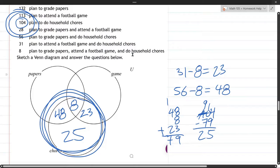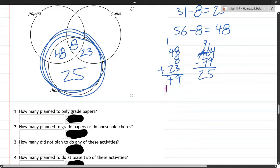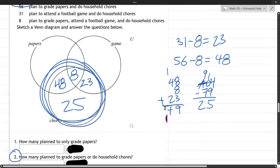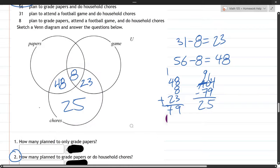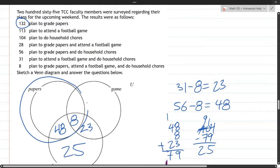Now we're ready to answer some questions. Now clearly I didn't finish this diagram, so there's plenty of questions I cannot answer. So let's see which ones I can answer. How many plan to only grade papers? So what I really focused on is the chores. So let's skip down to the one with the chores. How many plan to grade papers or do household chores? It looks like I'm going to need the paper number for this. So let's go ahead and get that. I guess we'll just finish this diagram. Might as well.